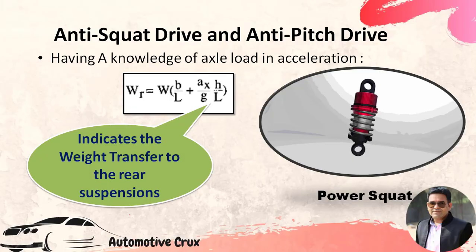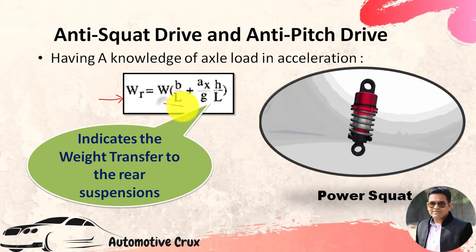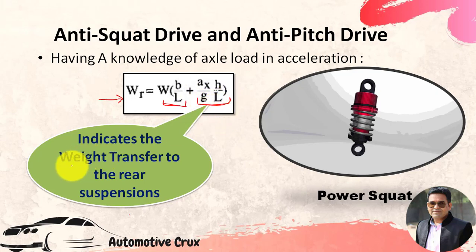In my previous videos on traction-limited acceleration, you can observe this equation. This equation represents the rear axle load in the acceleration mode. This expression comprises two terms on the right-hand side: the first term indicates the static load, and the second term indicates the load transfer in the acceleration mode — that is, the weight transfer to the rear suspension due to the acceleration condition.